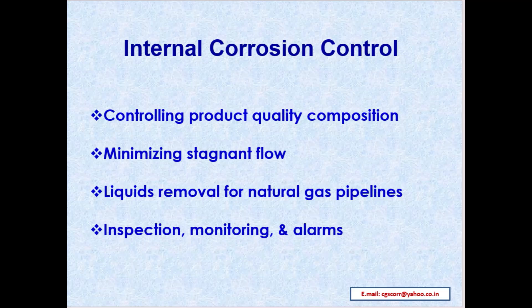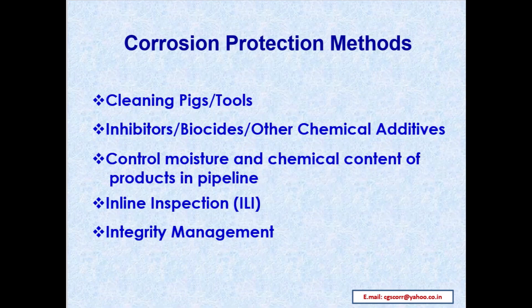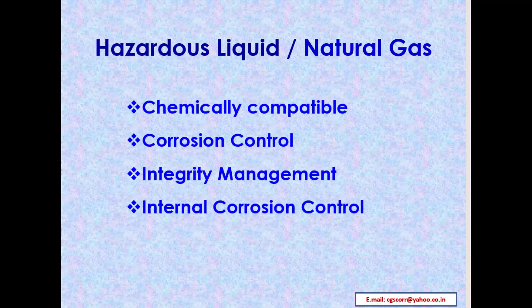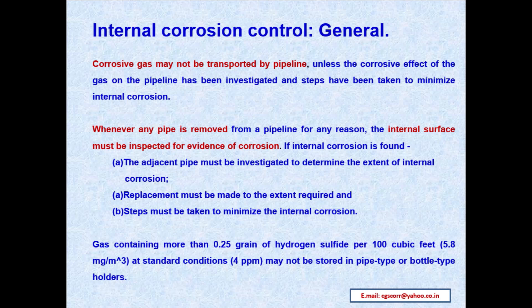Internal corrosion control — unique features include: controlling product quality and composition, minimizing stagnant flow, liquids removal for natural gas pipelines, inspection, monitoring and alarms. Corrosion protection methods include cleaning pigs and tools, inhibitors, biocides, other chemical additives, control of moisture and chemical content of products, and pipeline inline inspection tools, integrity management for hazardous liquid and natural gas.